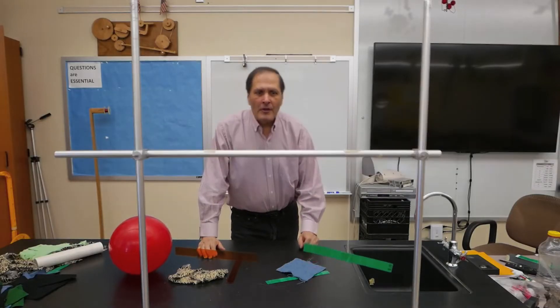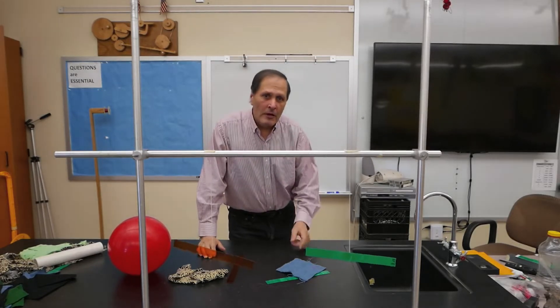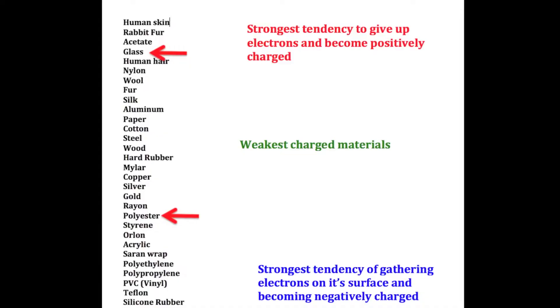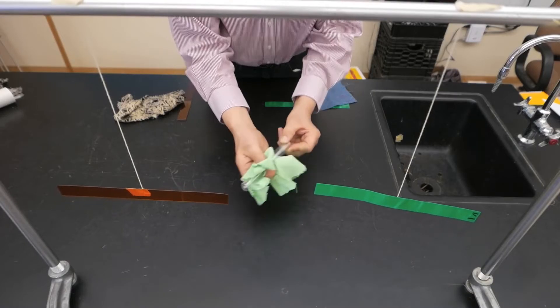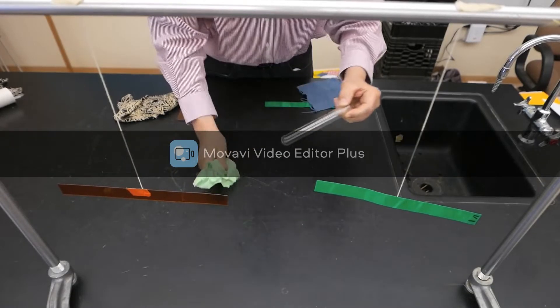Now that we've established our charges, we can try other materials on that table and see if they behave the same way. My next test is going to be glass and polyester. In this case, I'm going to use a test tube and rub it with a piece of polyester cloth.